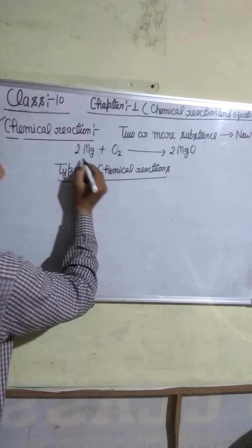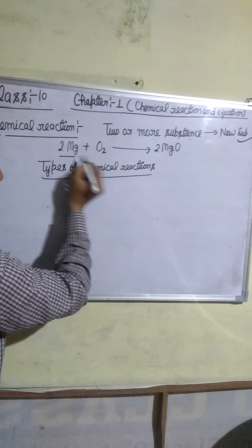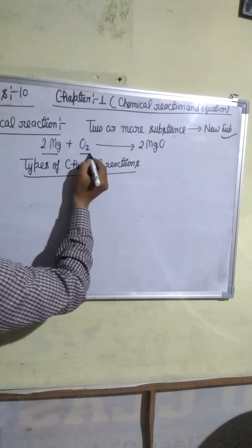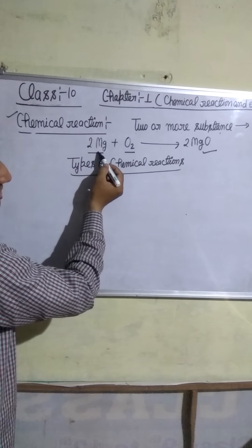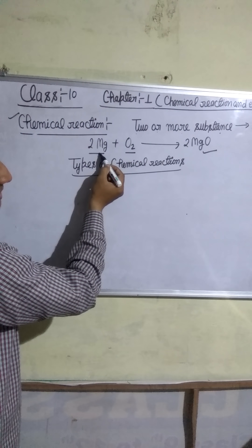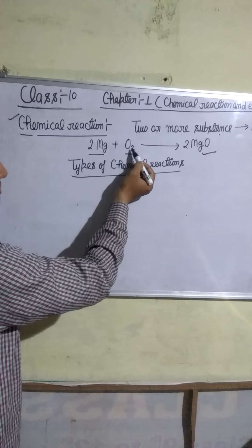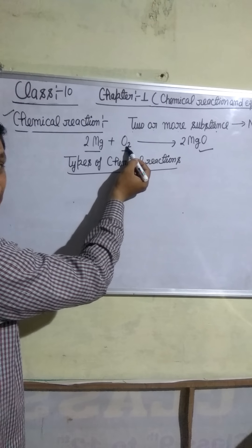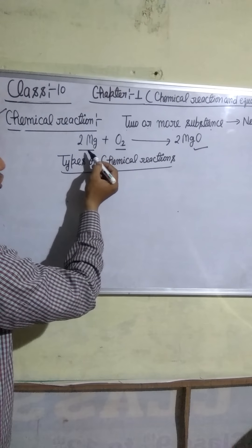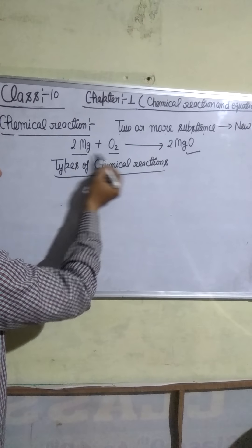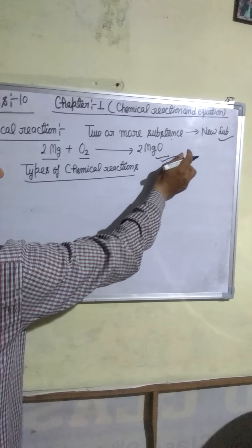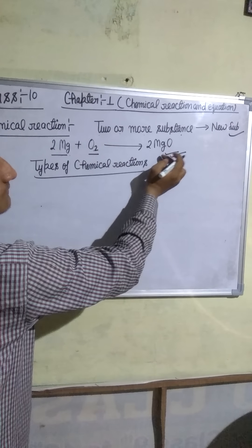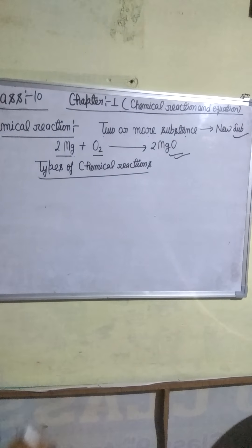For example, magnesium burns in air to form magnesium oxide. Here magnesium is one substance, oxygen is another substance. These two substances combine to form a new substance, magnesium oxide, with new properties.